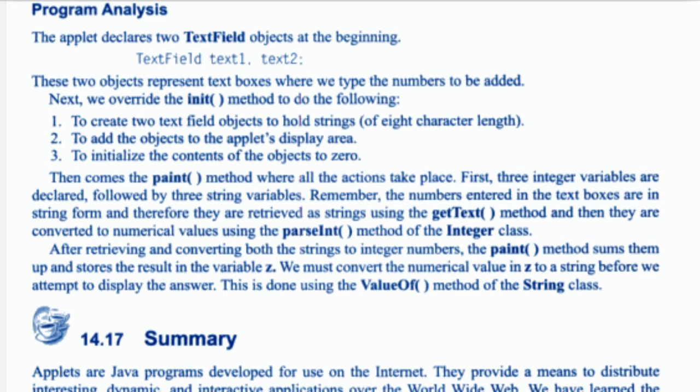Then comes the paint method where all the actions take place. First, three integer variables are declared followed by three string variables. Remember, the numbers entered in the text boxes are in string form, and therefore they are retrieved as strings using the getText method, and then converted to numerical values using the parseInt method of the Integer class. After retrieving and converting both strings to integer numbers, the paint method sums them up and stores the result in variable z. We must convert the numerical value in z to a string before we attempt to display the answer, which is done using the valueOf method of the String class.